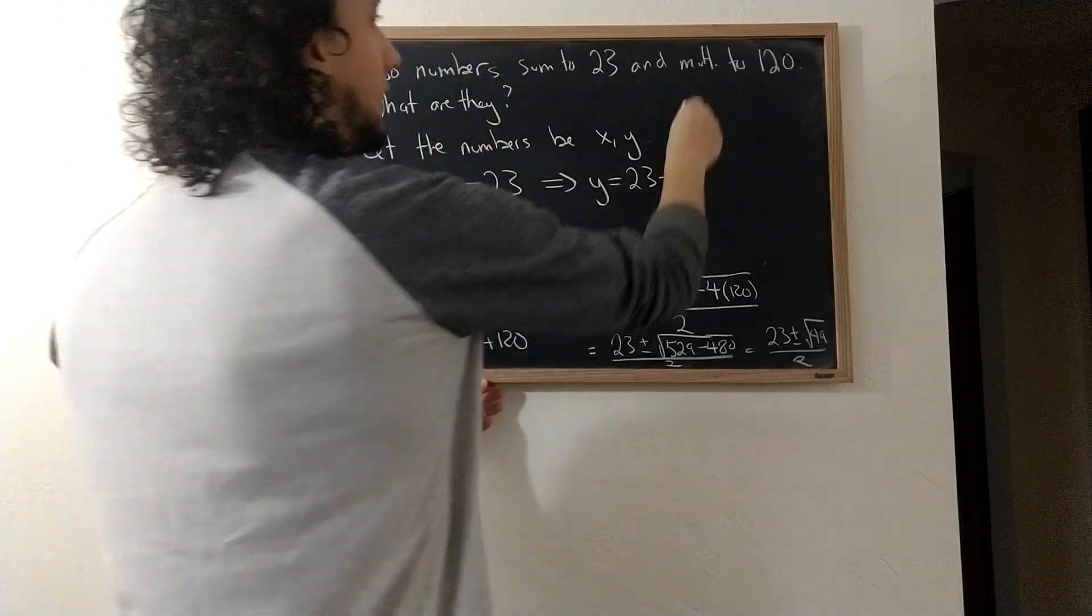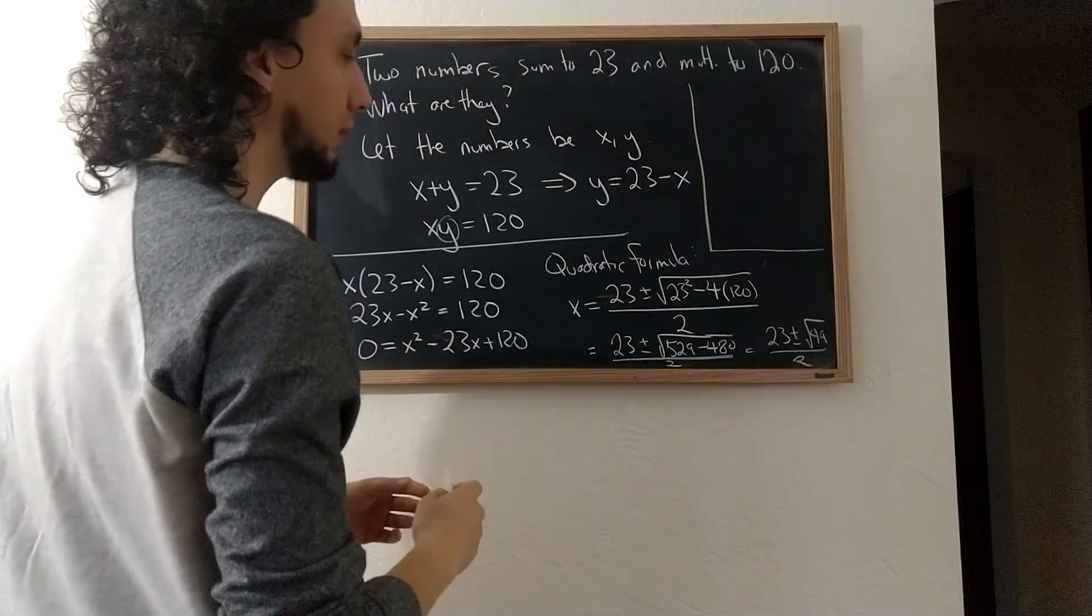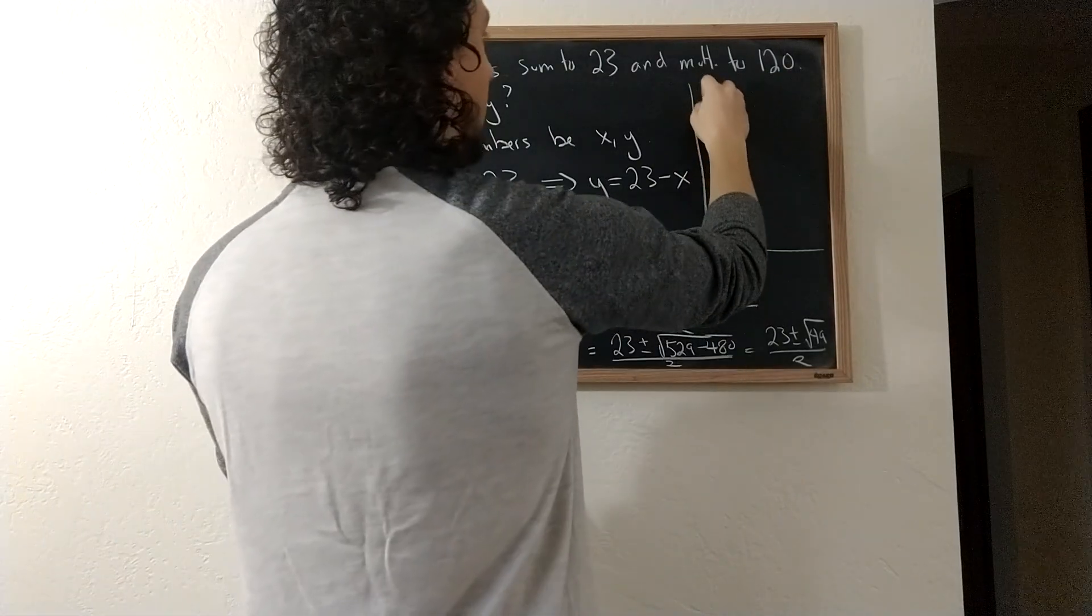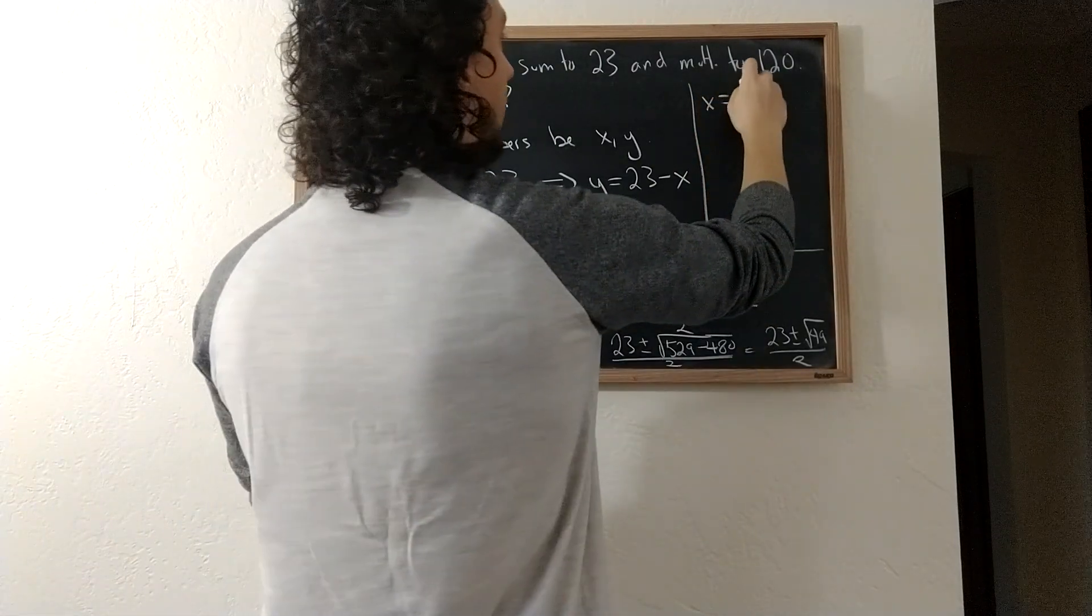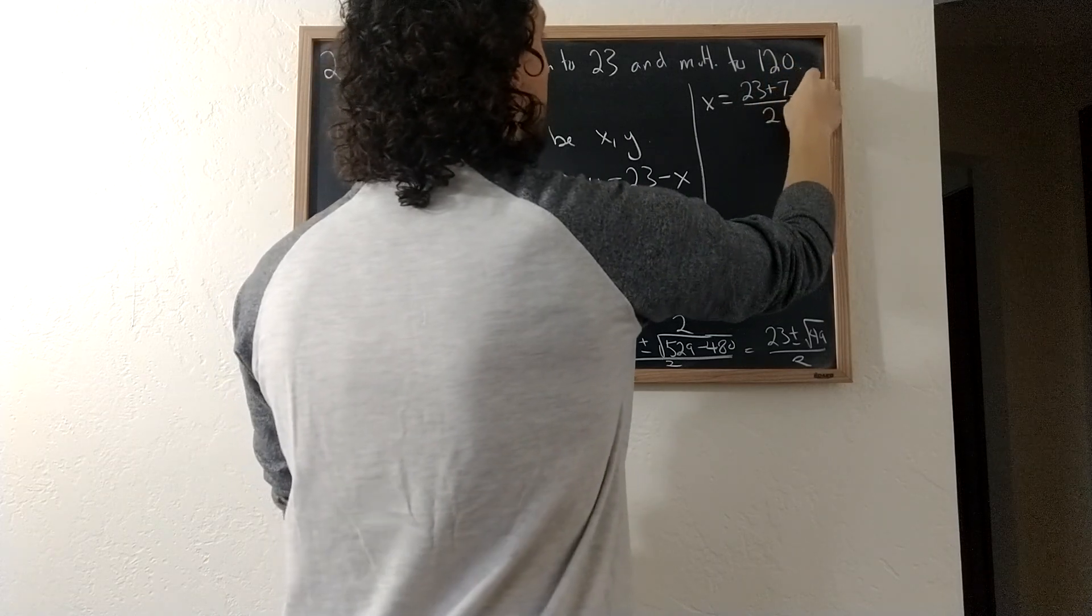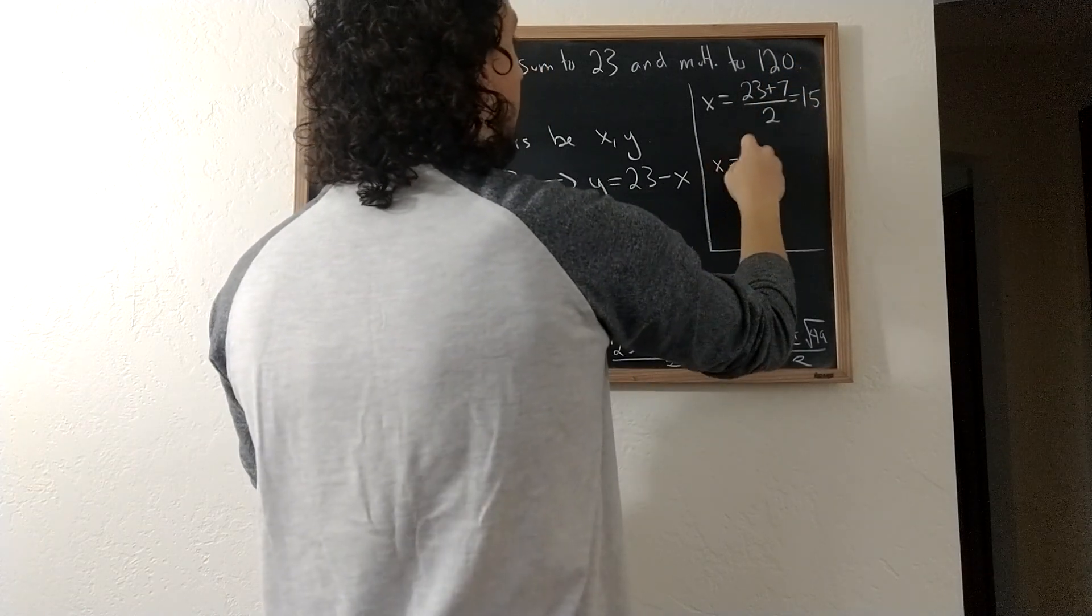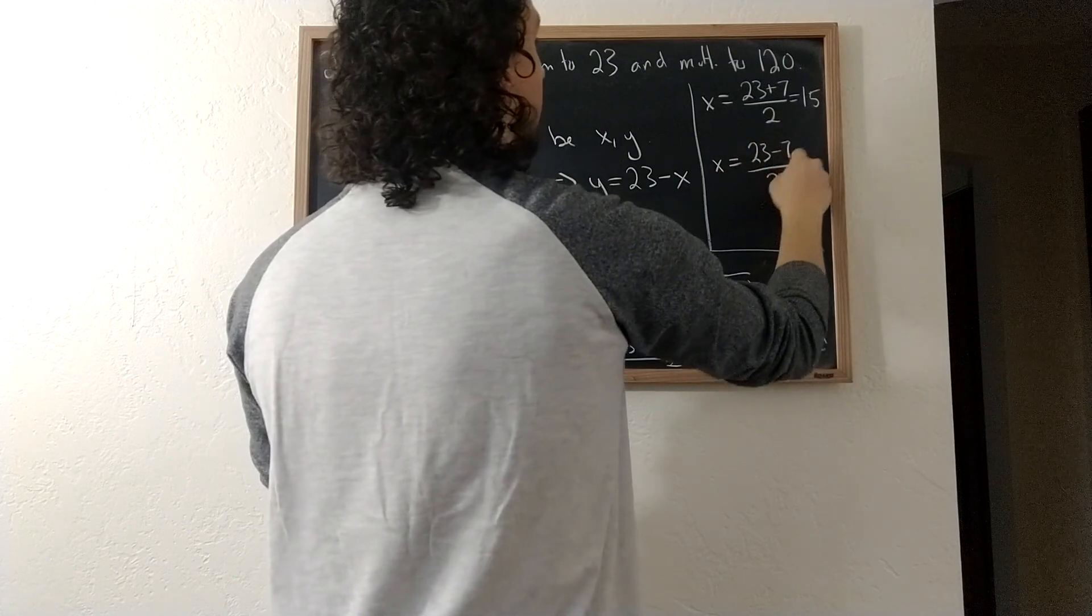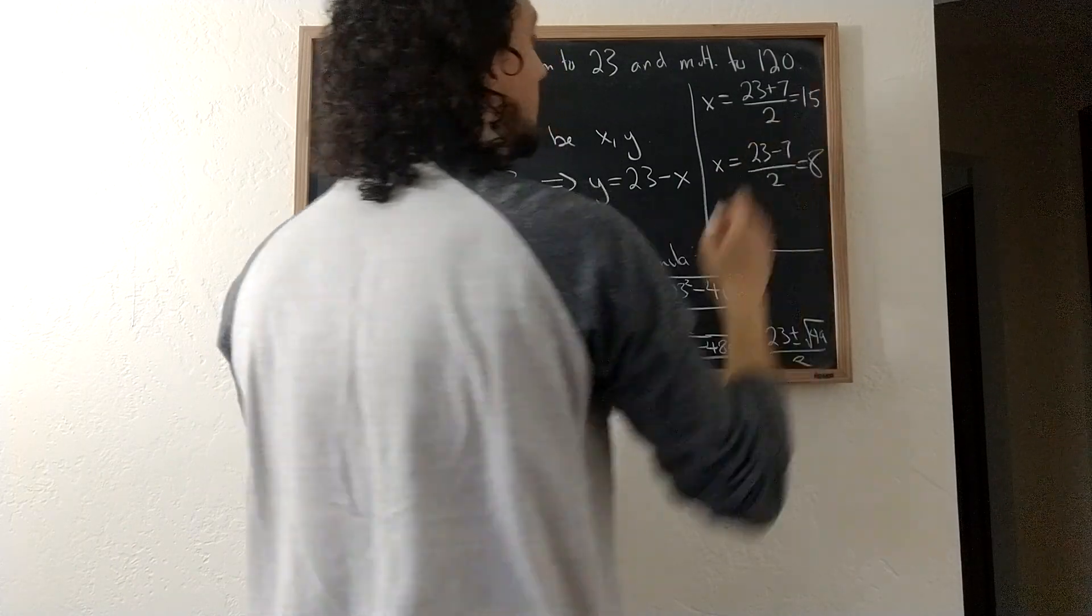So what does that give me? Use this little bit of extra space that I have on the board here. It gives me that x equals either 23 plus 7 divided by 2, which is 15, or x equals 23 minus 7 divided by 2, which is 8.